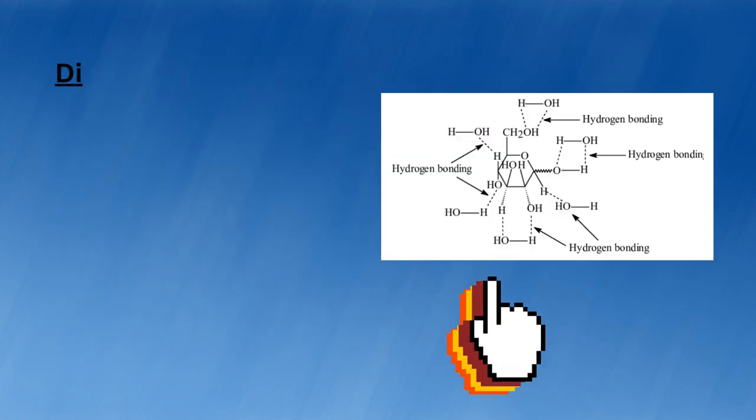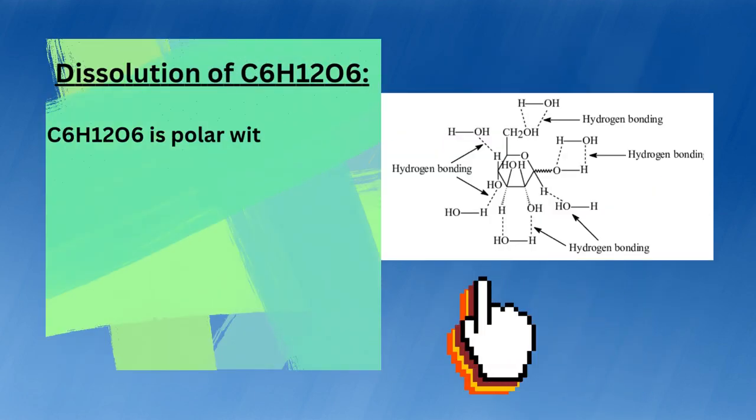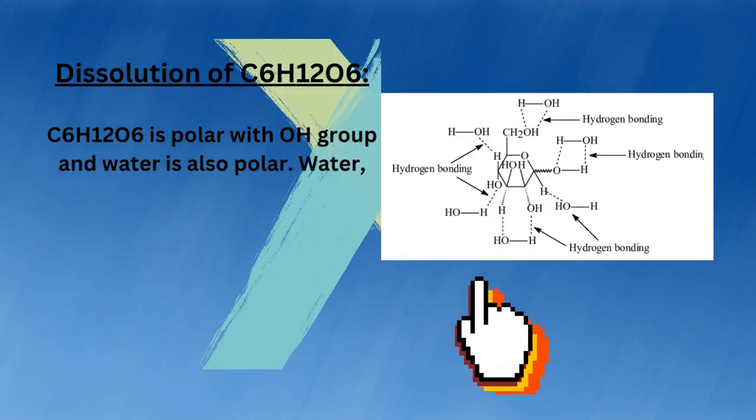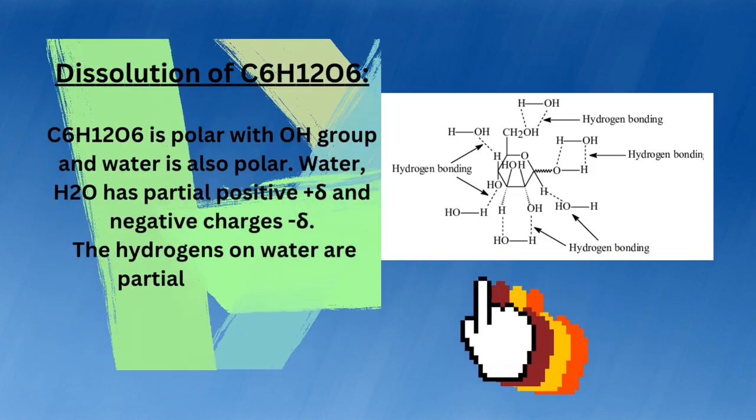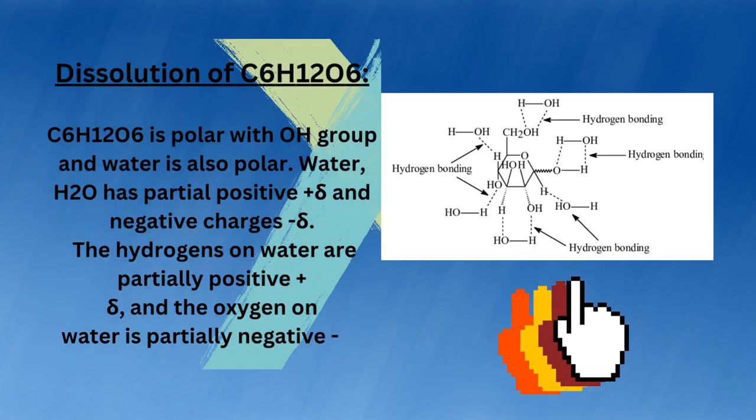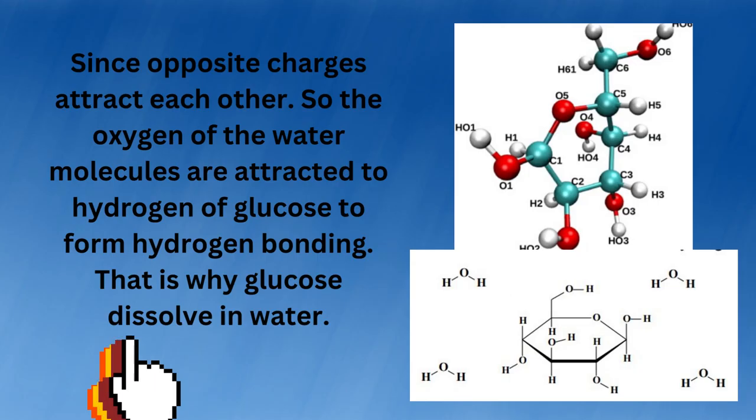Dissolution of glucose: Glucose is polar with OH groups, and water is also polar. Water has partial positive and negative charges. The hydrogens on water are partially positive, and the oxygen on water is partially negative.